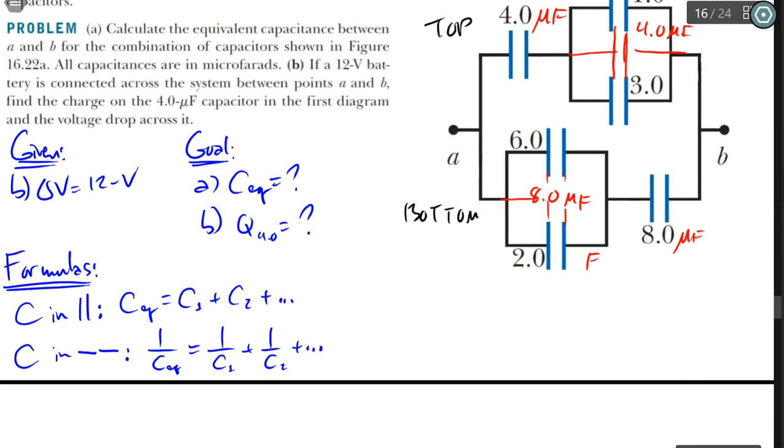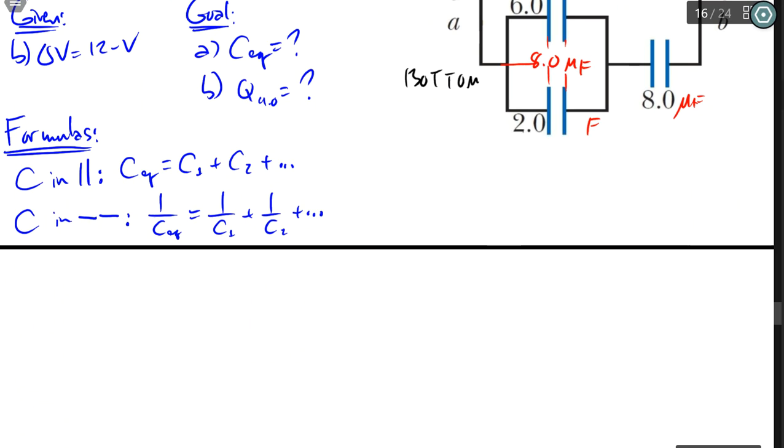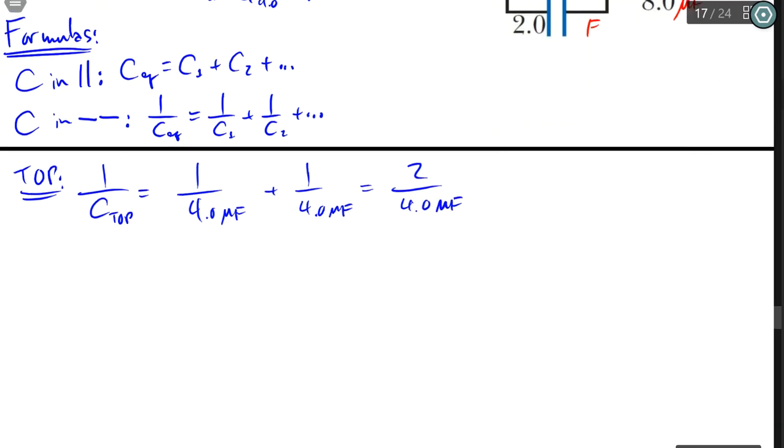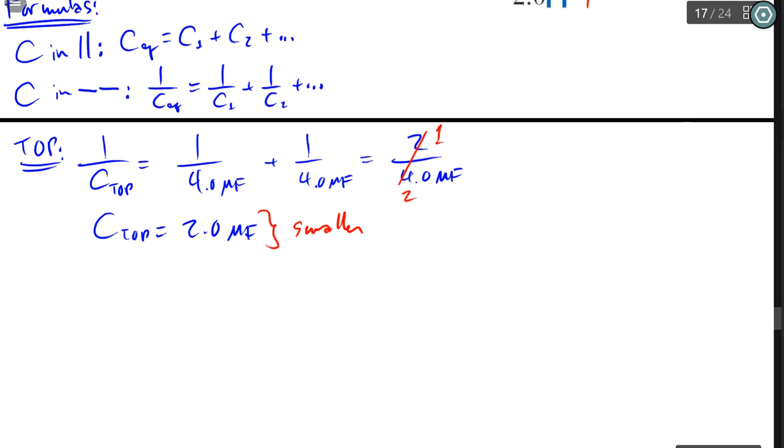Now we could start from the top, or we could start from the bottom. So from the top, the equivalent capacitance of the top is essentially 1 over 4 plus 1 over 4. So that's cool, because I know that's going to equal to 1/2. And then the equivalent capacitance of the top, if I take the reciprocal of 1/2, it actually ends up being 2 microfarads. But once again, take note that it became smaller because it's in series.